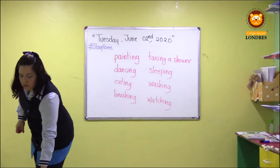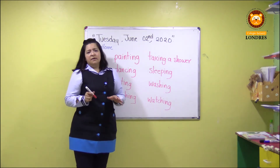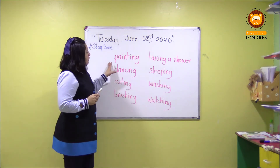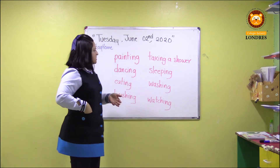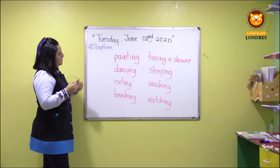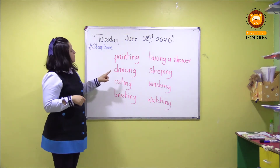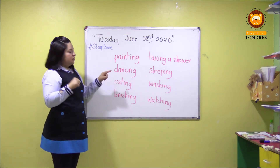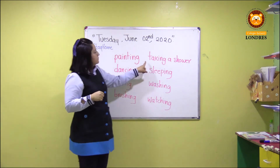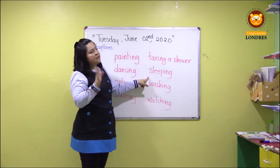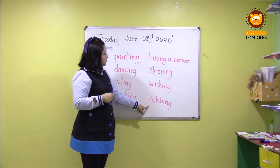Creo que algunos de ustedes hicieron correctamente la dinámica para dividir las sílabas cuando estuvimos con painting, sleeping, ¿sí se acuerdan? Pues va a ser lo mismo, ahora vamos a identificar pero tenemos más verbos. Painting, dancing, eating, brushing, taking a shower, sleeping, washing, and watching. That's right.